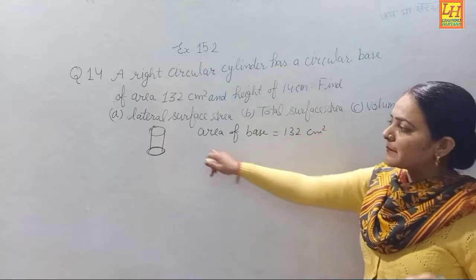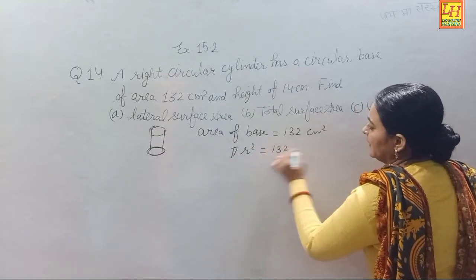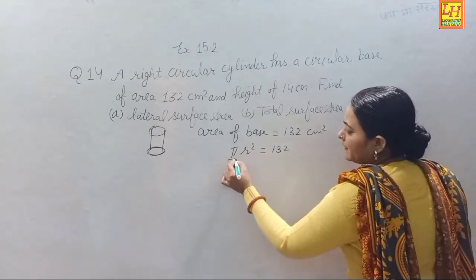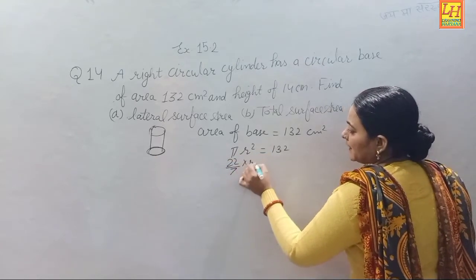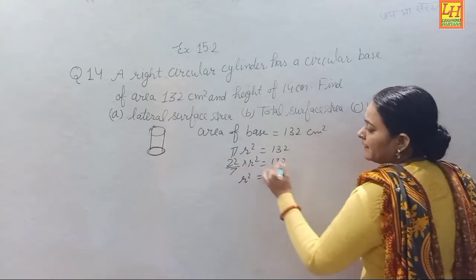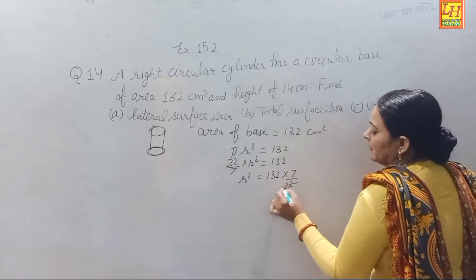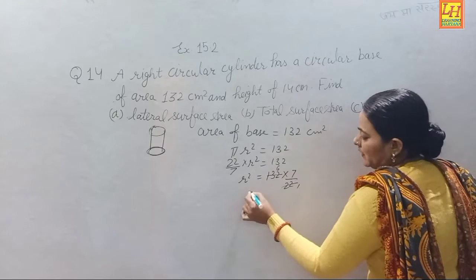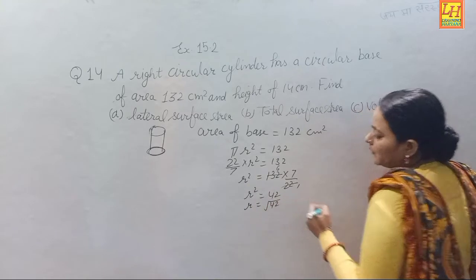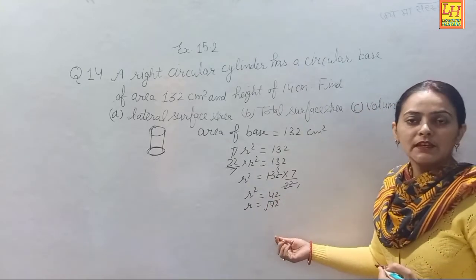Since the base is circular, base area = πr² = 132. So r² = 132 × (7/22) = 42. Therefore r = √42 centimeters.